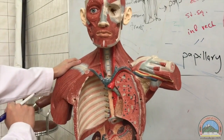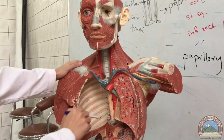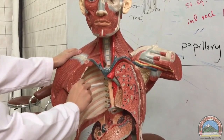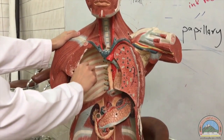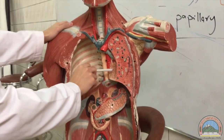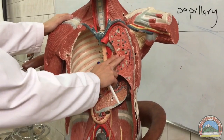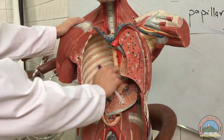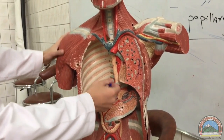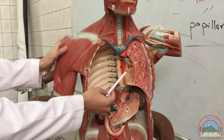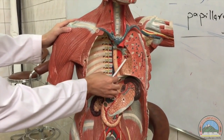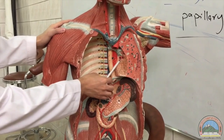This is the first plastic model. This is the position of the heart. This is the left lung. These are the pulmonary veins.